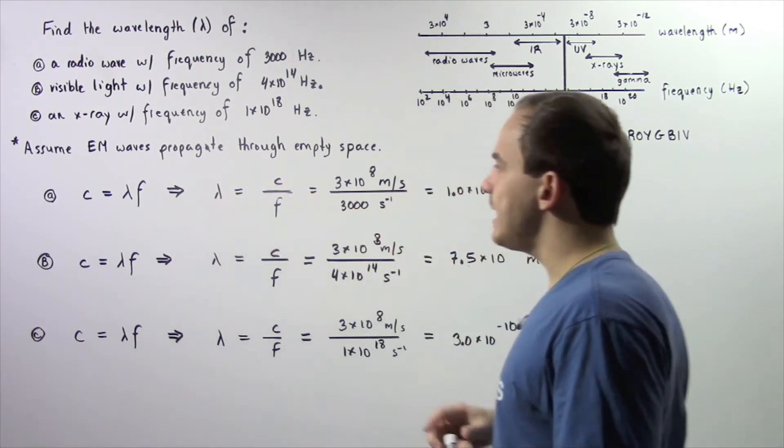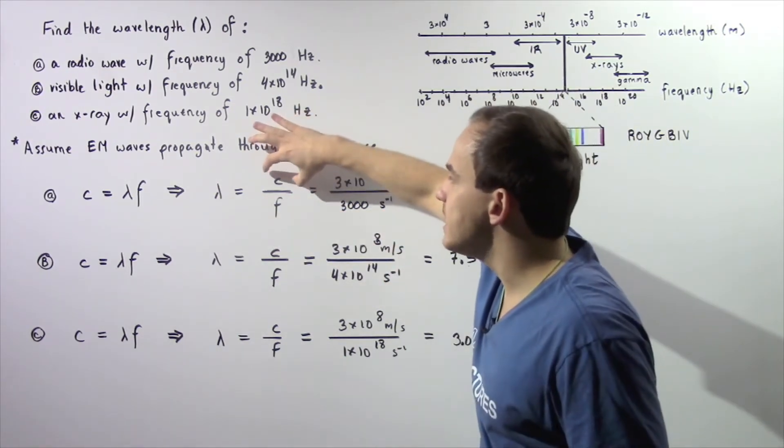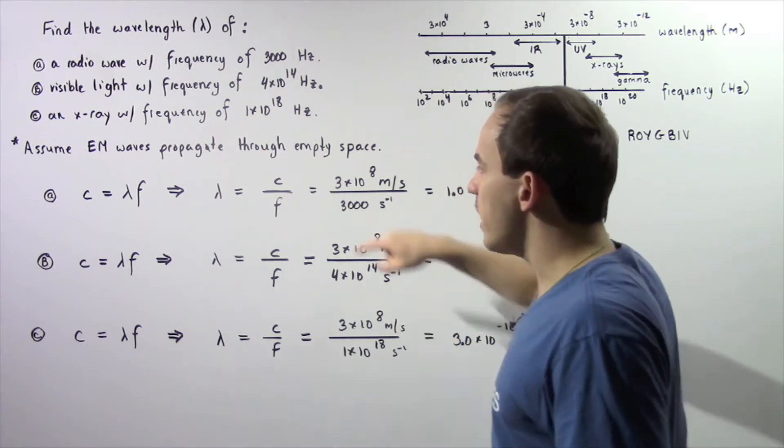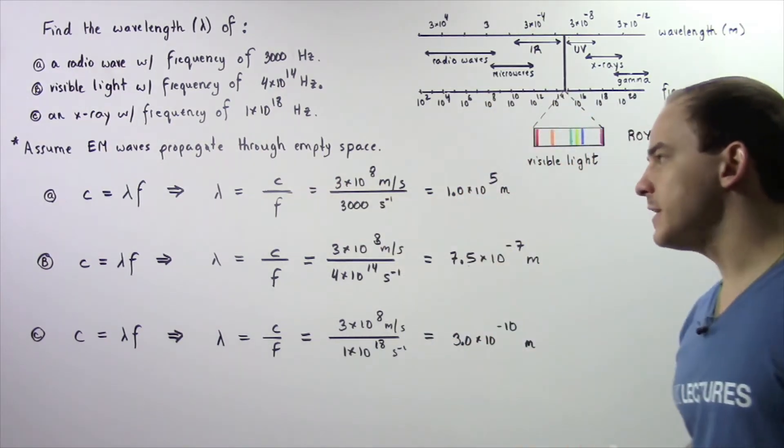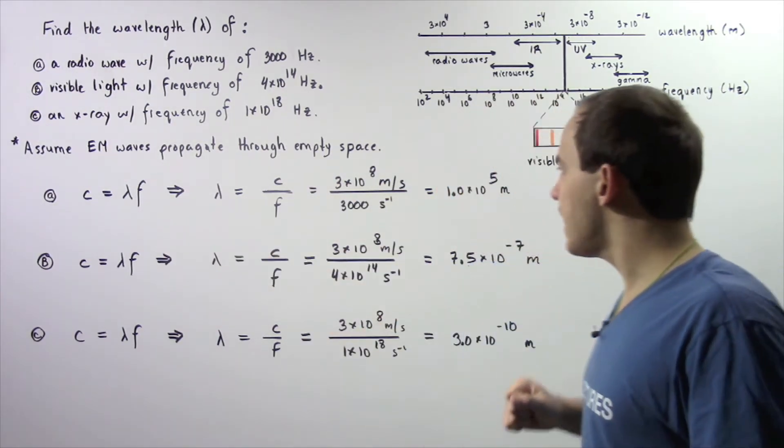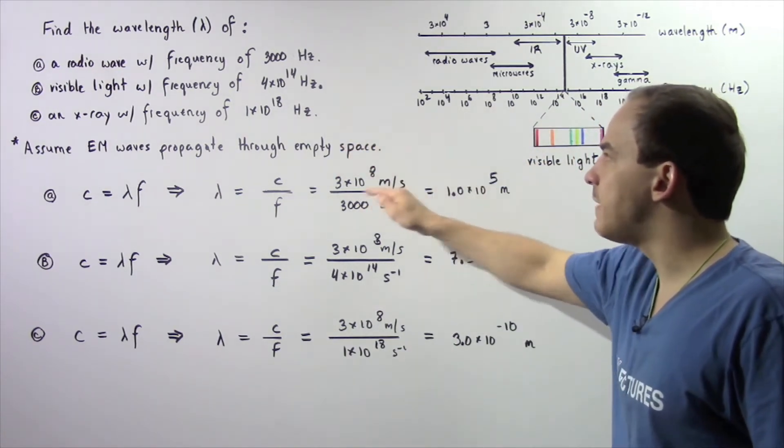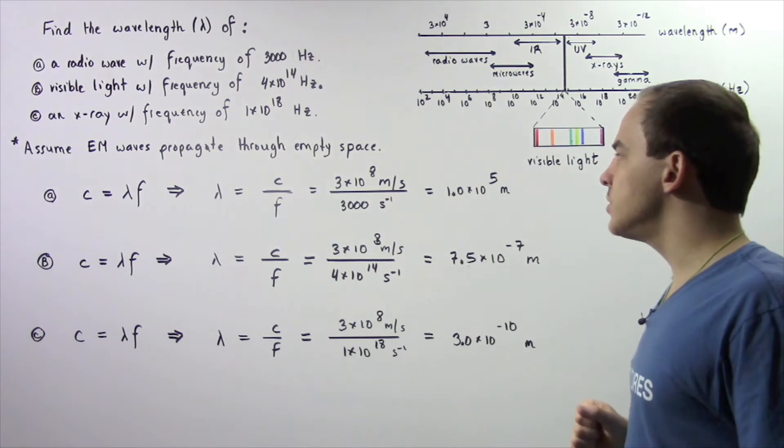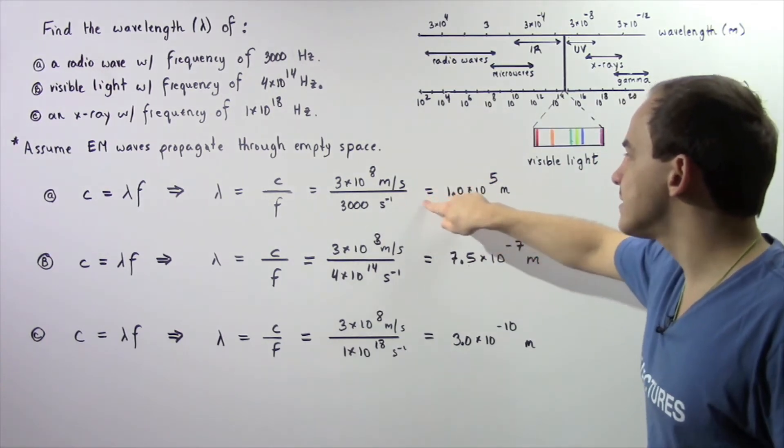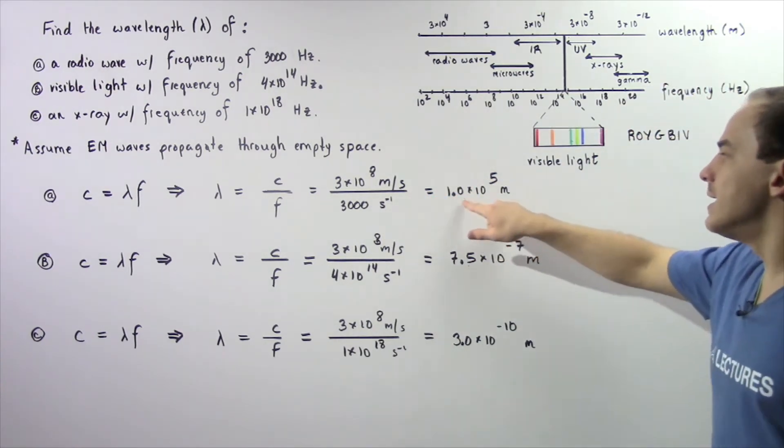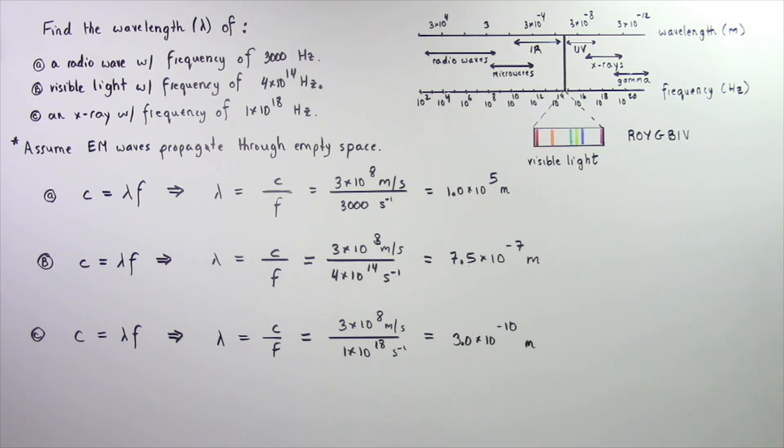The wavelength is equal to the speed of our electromagnetic wave divided by the frequency. So in part A, we have 3 times 10 to the 8 m per second divided by 3,000 Hz. The seconds cancel and we're left with 1 times 10 to the 5 m.